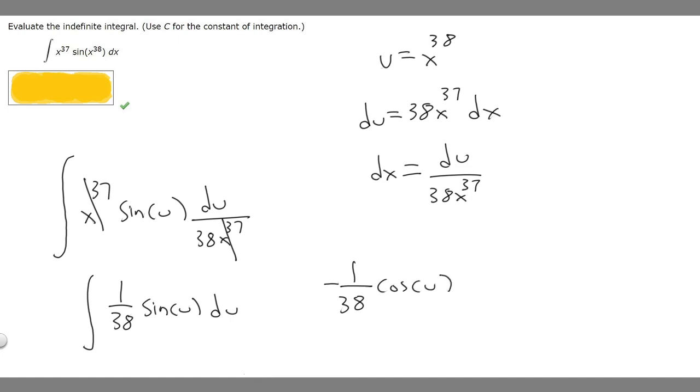And then whenever you take the antiderivative, you have to add plus C. And then now that we've got it like this, all we've got to do is replace u with what it actually is. And so we decided that u was x to the 38. So it's going to become minus 1 over 38 times the sine of u, which is x to the 38, and then plus C.